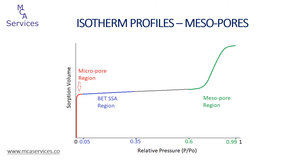The isotherm starts to curve upwards at around 0.6 relative pressure as the pores start to fill with adsorbate. Since this portion represents a mesoporous material, the pores will be completely filled with adsorbate as saturation is approached — that is, relative pressure close to one — and because of that we observe a horizontal region towards the end of the isotherm called the Gurvitch plateau.